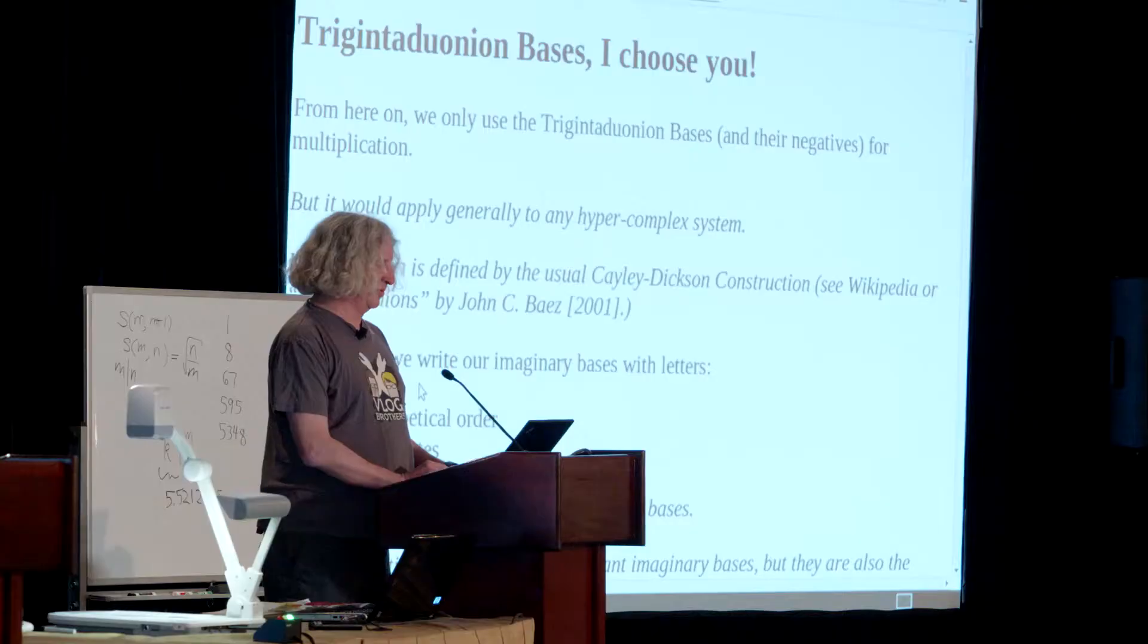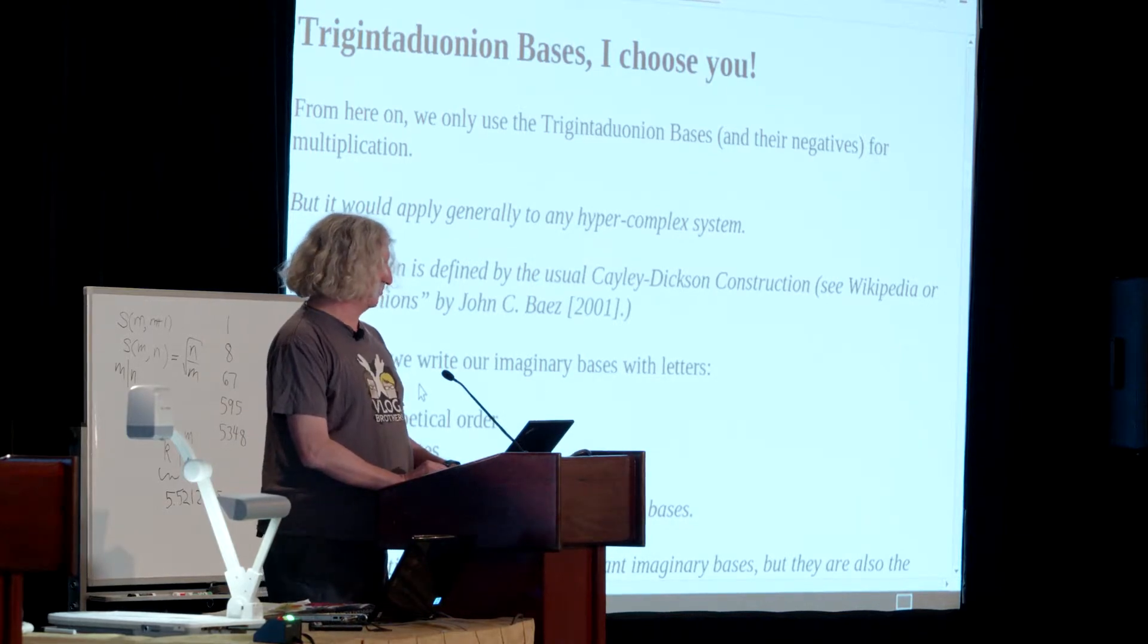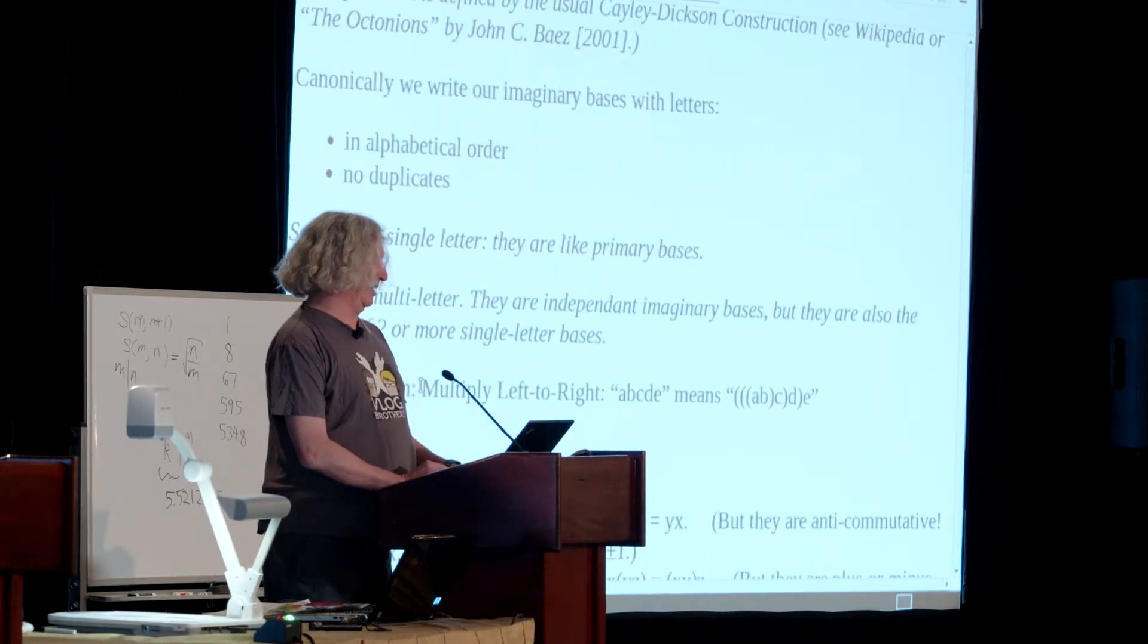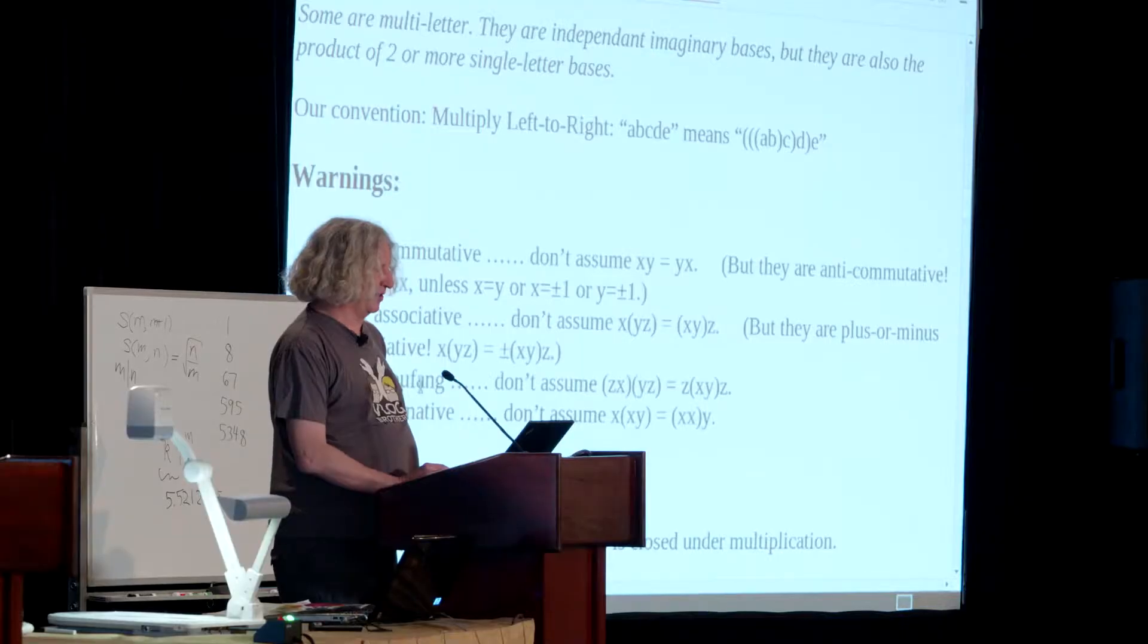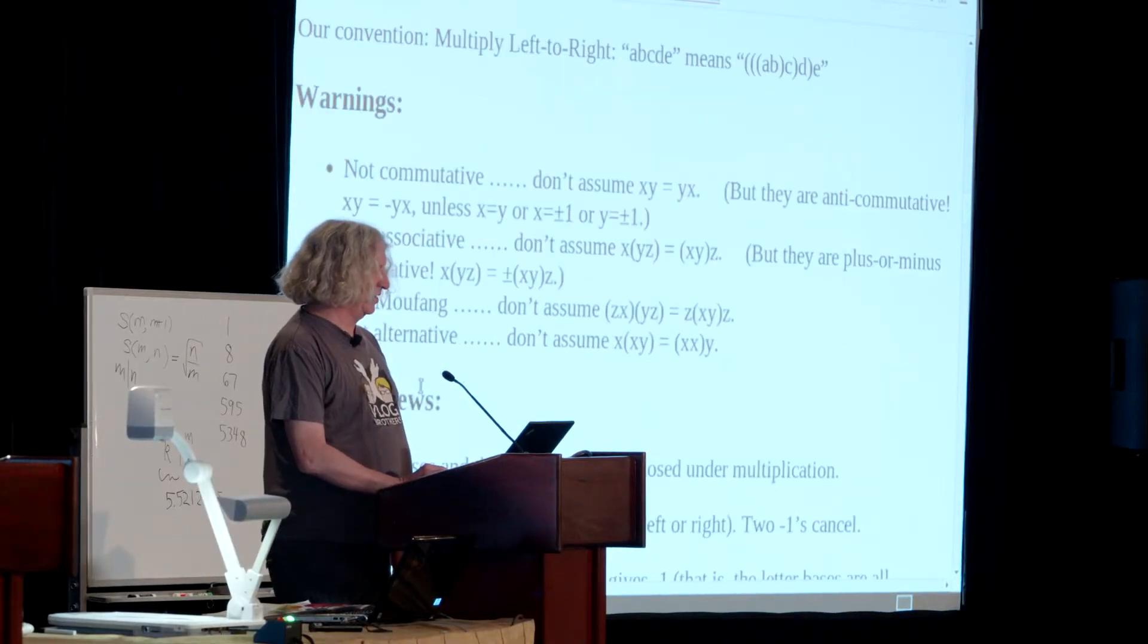From here on, I'm only going to be talking about these Trigintaduonian bases. There's a lot of other Trigintaduonian numbers that you get if you multiply these bases by coefficients and add them together, but we just want these base vectors. Canonically, I'm always writing them in alphabetical order and with no duplicates. My convention is multiply left to right.